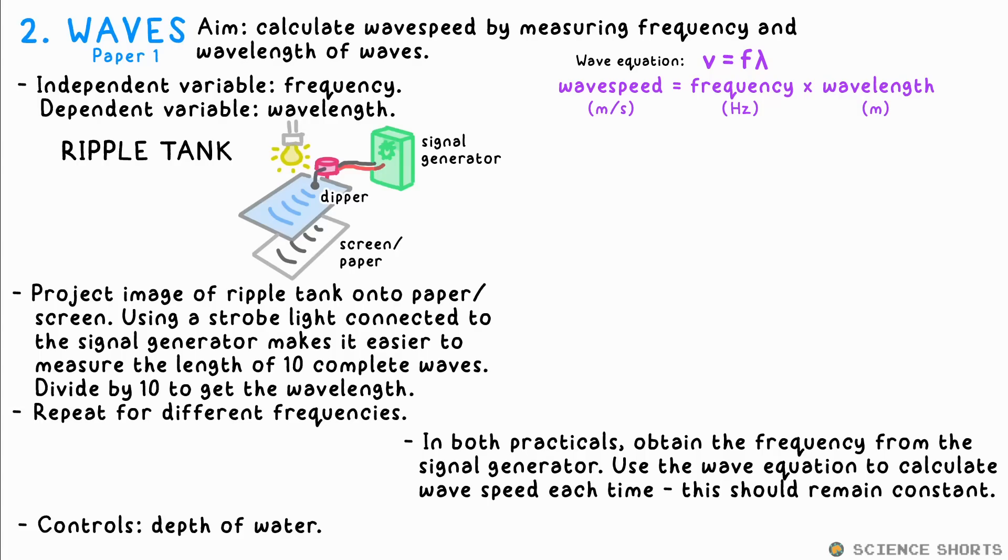But according to the wave equation V equals F lambda, the wave speed V should remain constant. That is, unless you change the depth of the water. You could also just count the number of waves reaching the end of the tank over 10 seconds if they're slow enough, then divide by 10 to get the frequency waves per second.